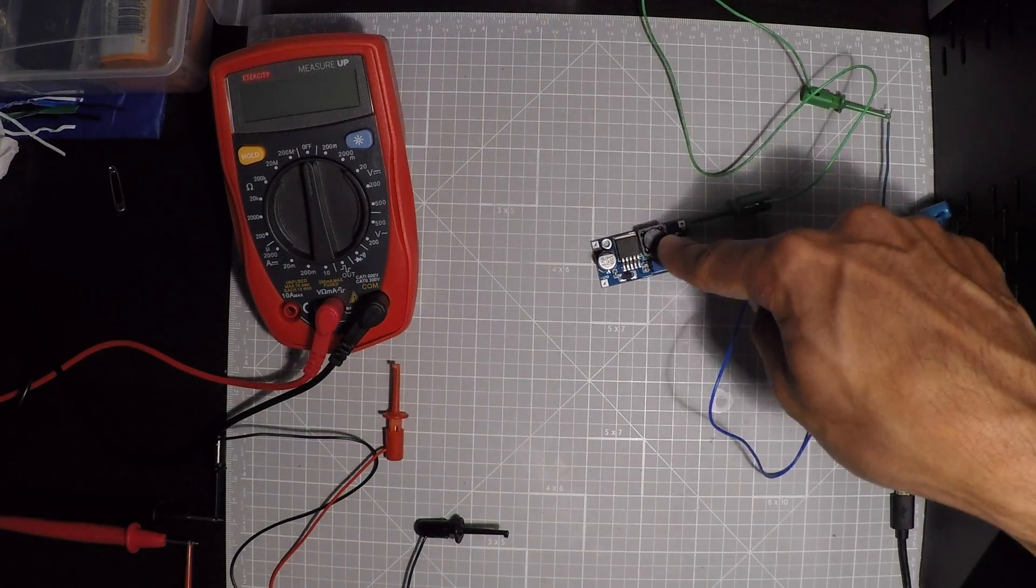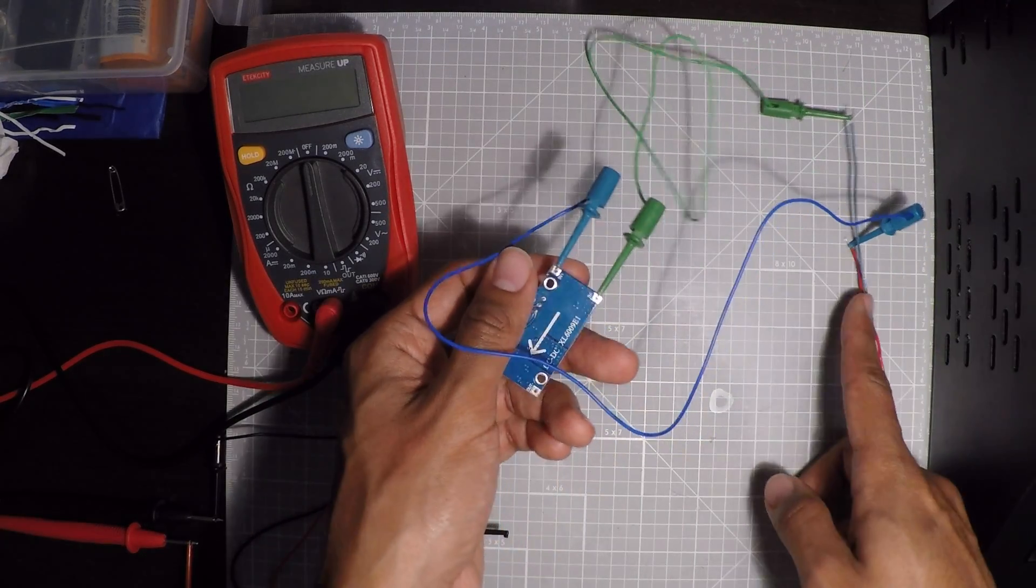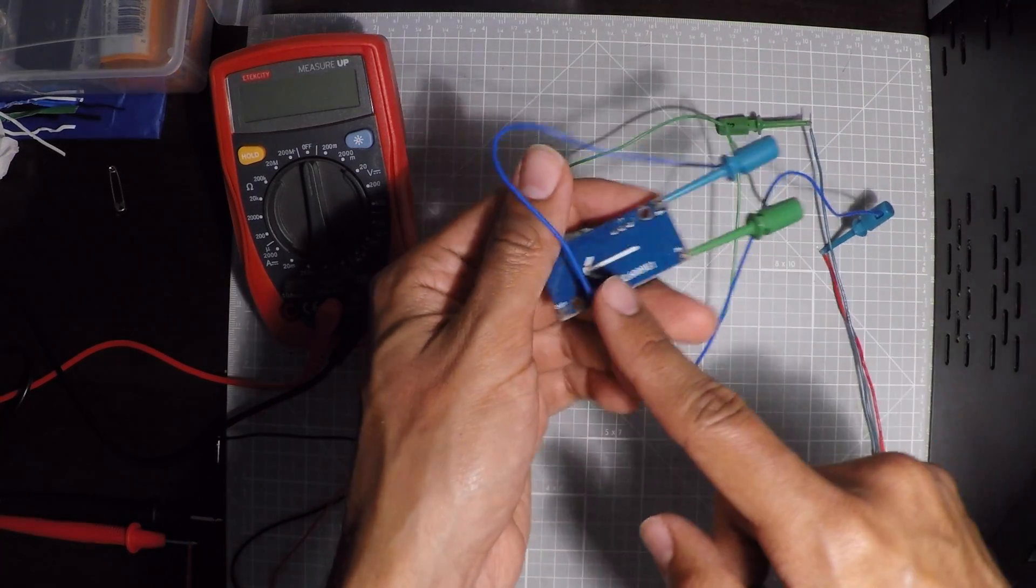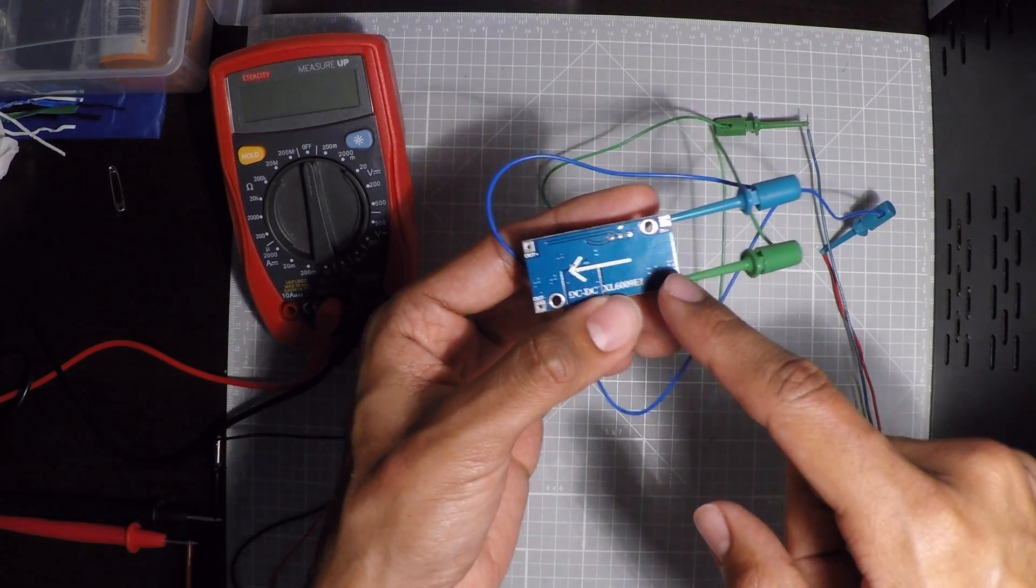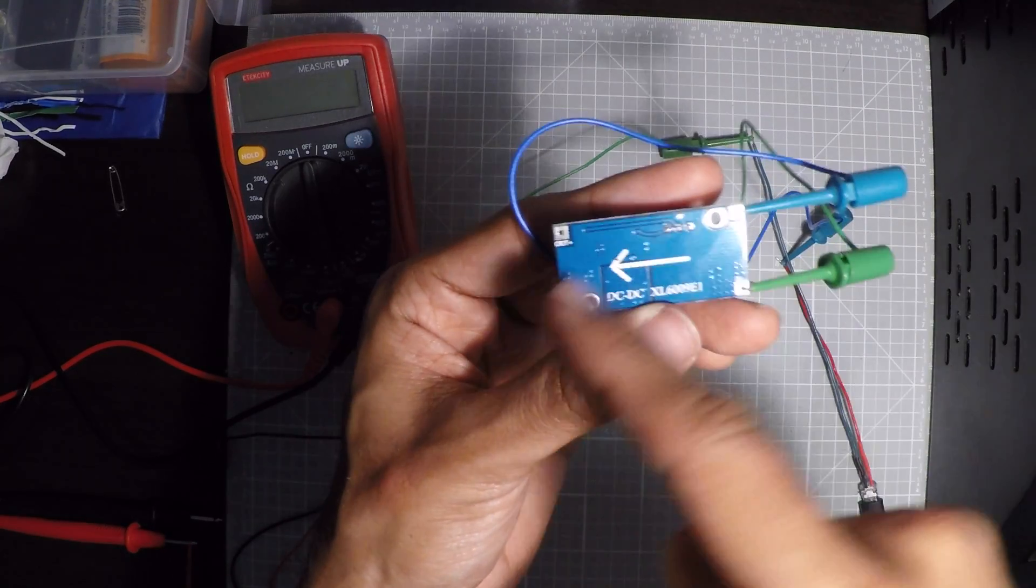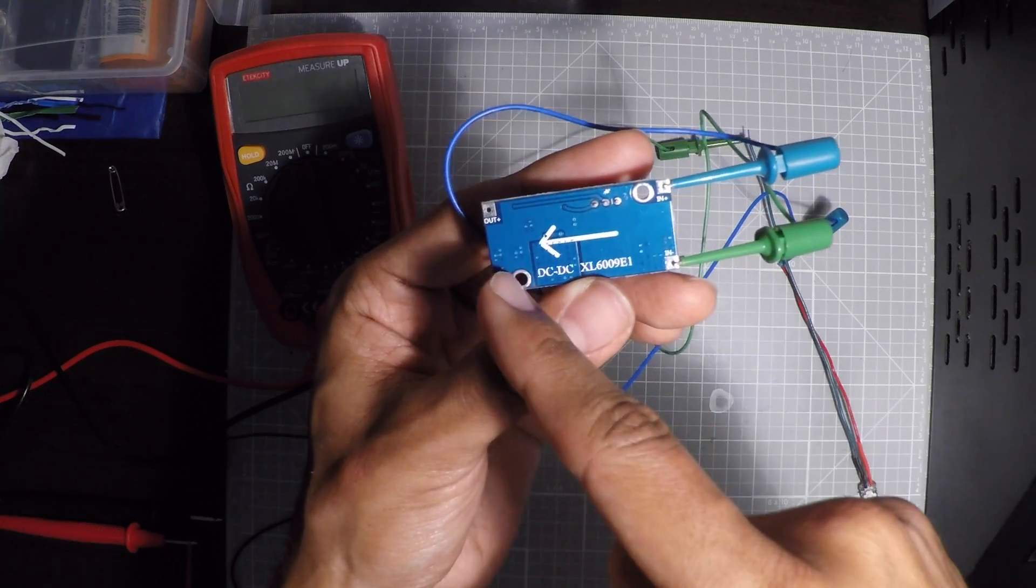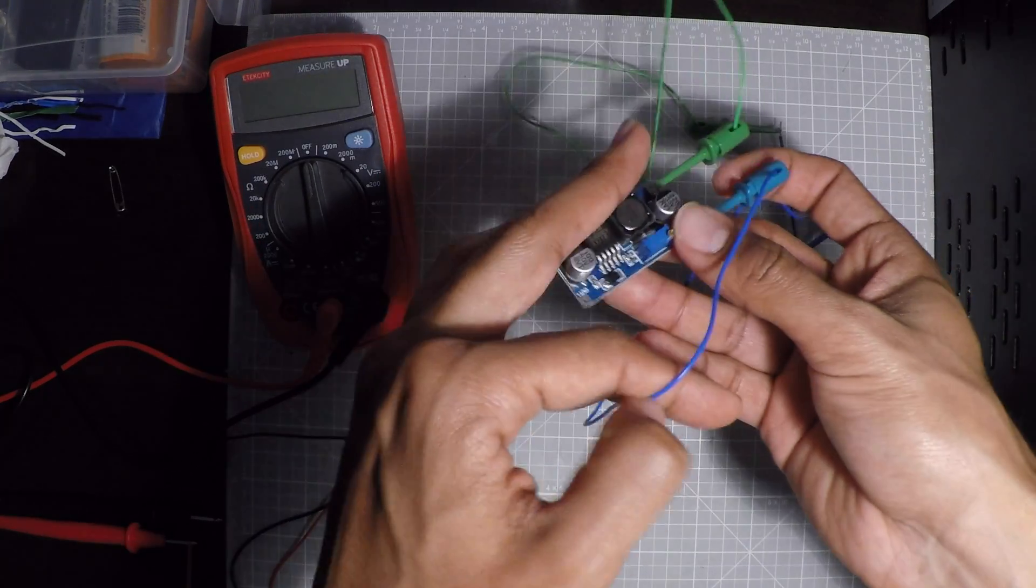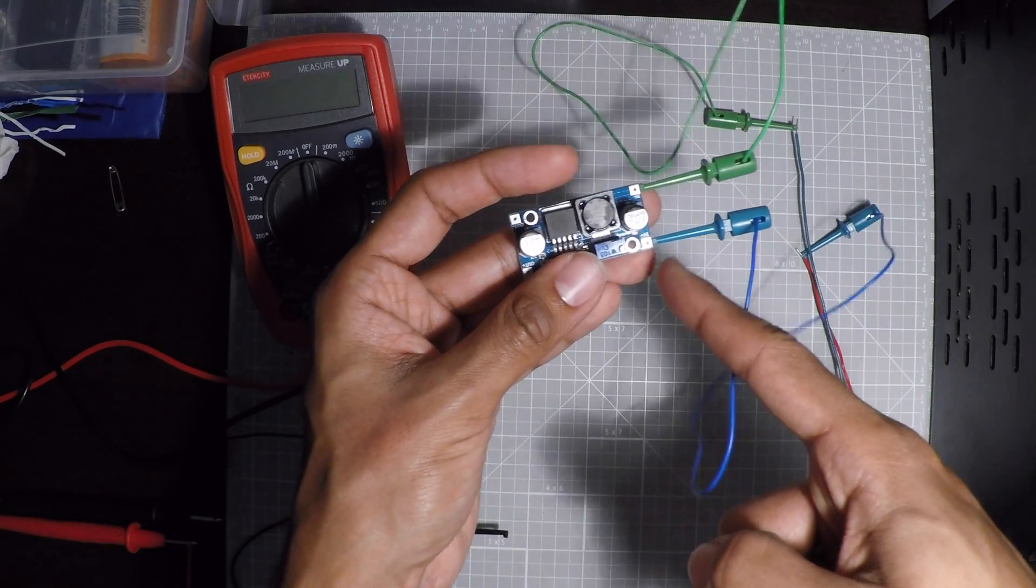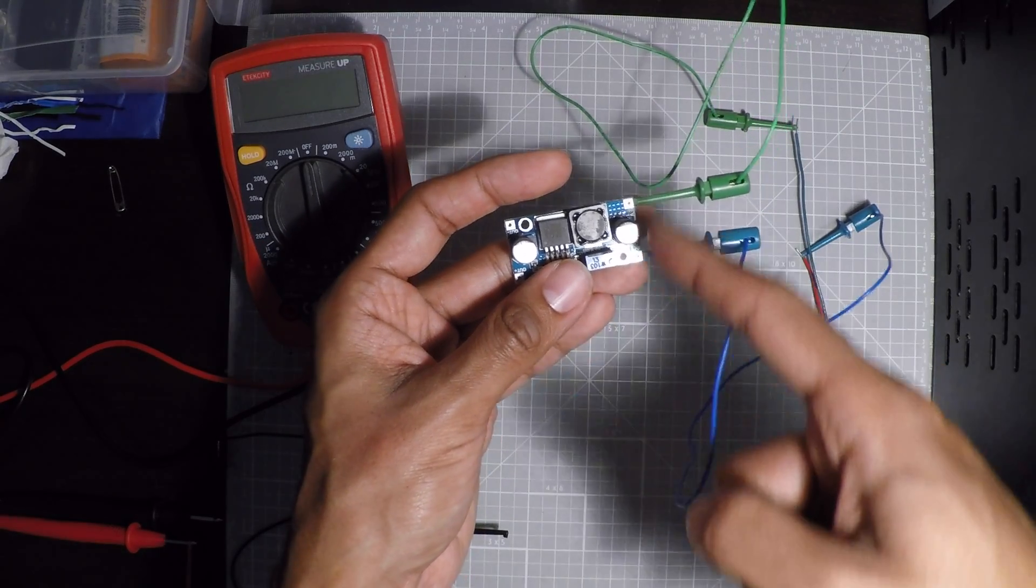Now to connect the boost converter, I've connected the positive and negative ends to the positive and negative of the input side. There's an arrow that tells you what's the input and what's the output, so you connect your leads on the input: positive to positive, negative to negative.